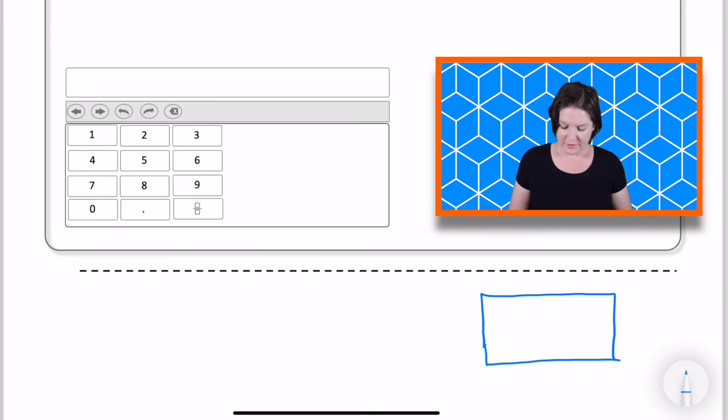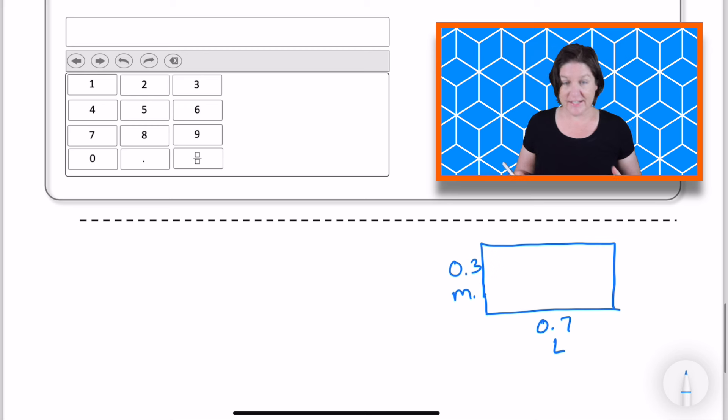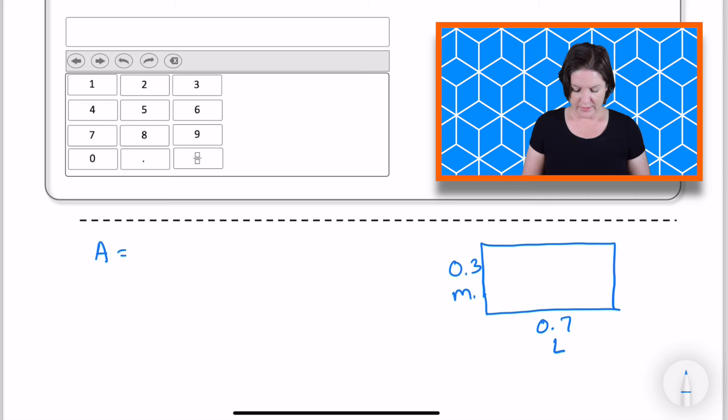All right. So we know that the length is 0.7 meter. That's our length. And the width is 0.3 meter. Okay. So what I'm doing is I need to multiply those two. The length times the width will give us the area. Or said another way, the area equals the length times the width.